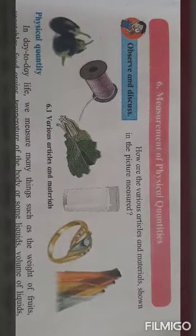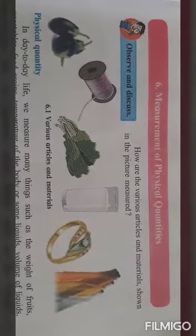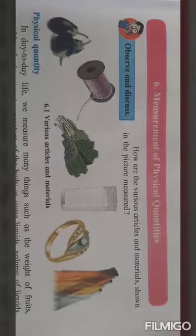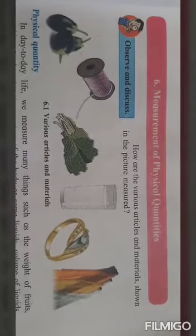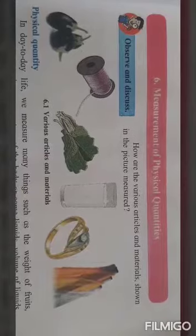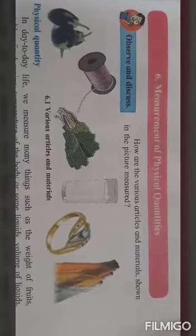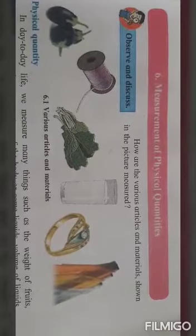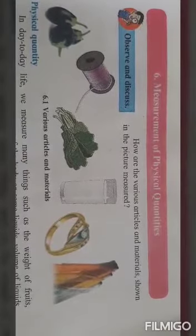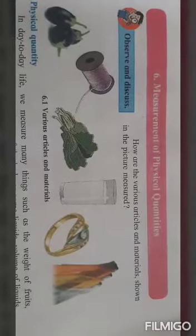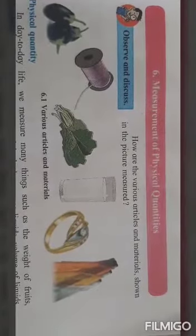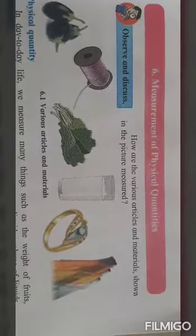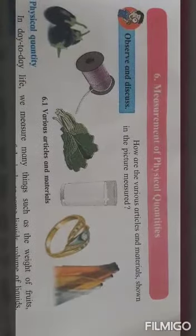Here, we can see a brinjal, a roll of thread, green vegetable, milk in a glass, ring of gold, and fabric or cloth. These items shown in the images include vegetables, thread roll, leafy vegetables, milk in glass, gold ring, and copper cloth.